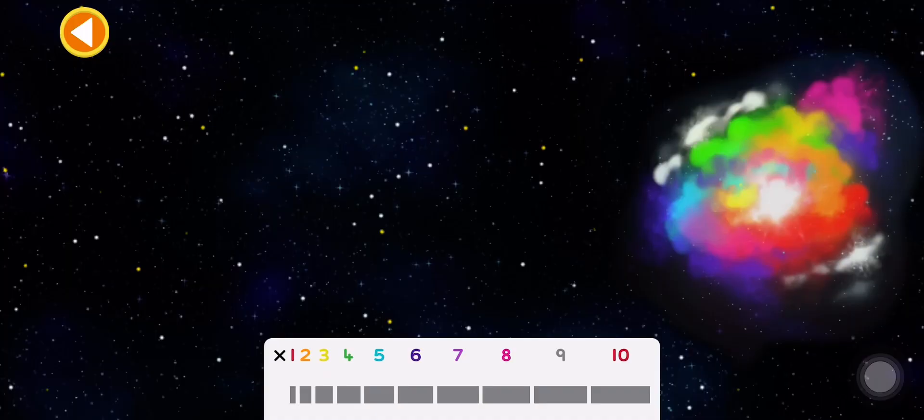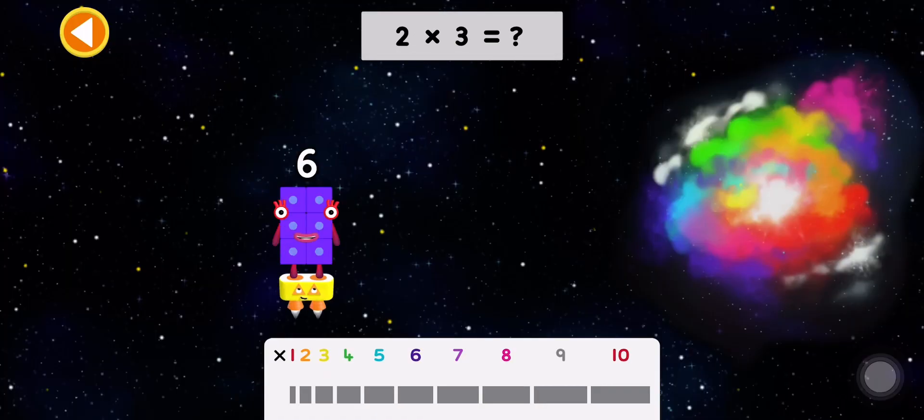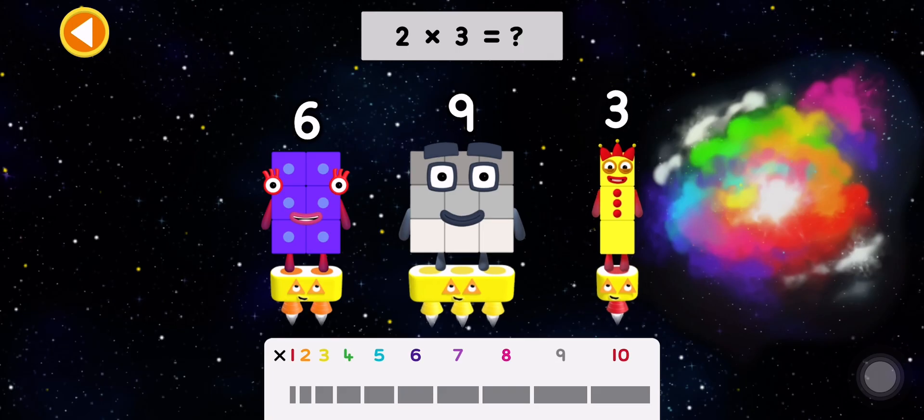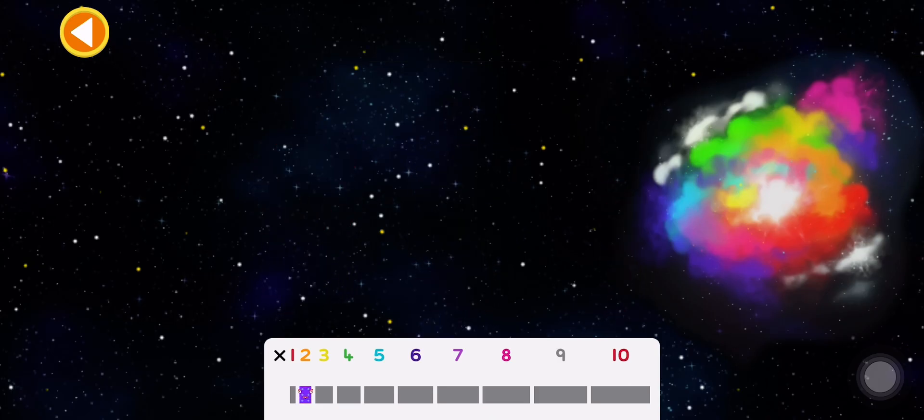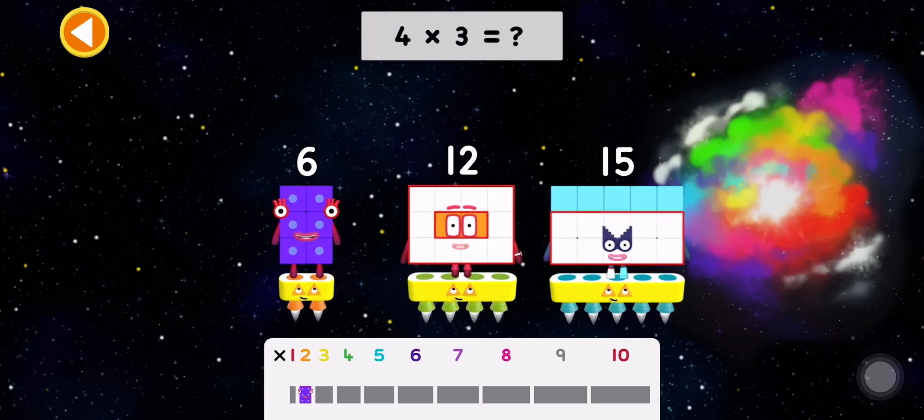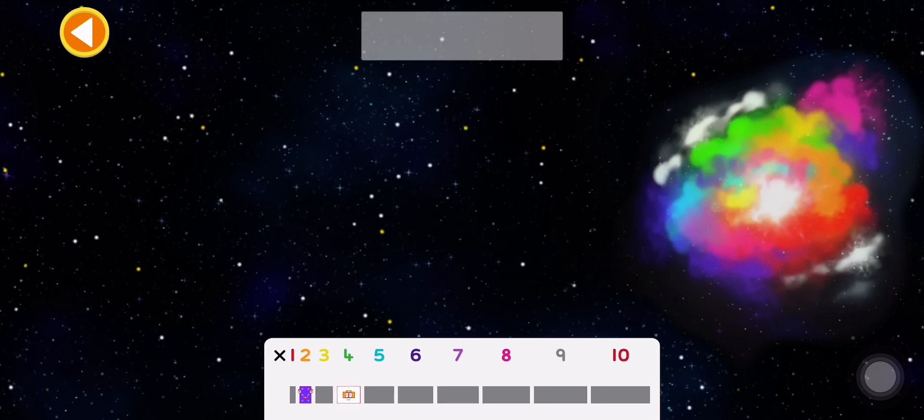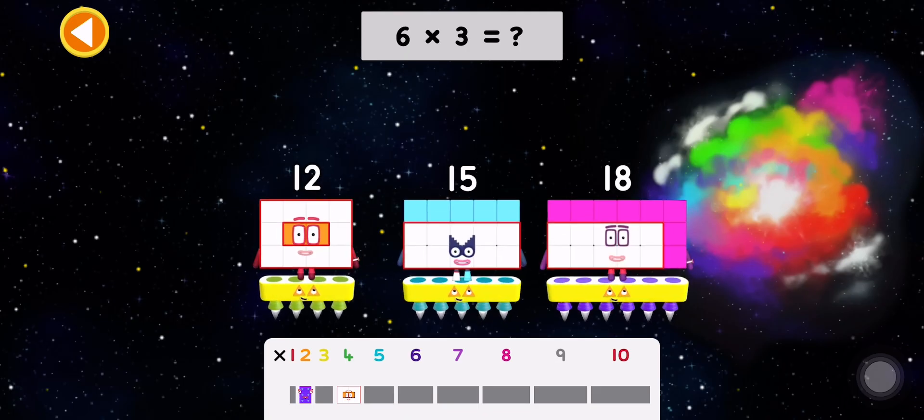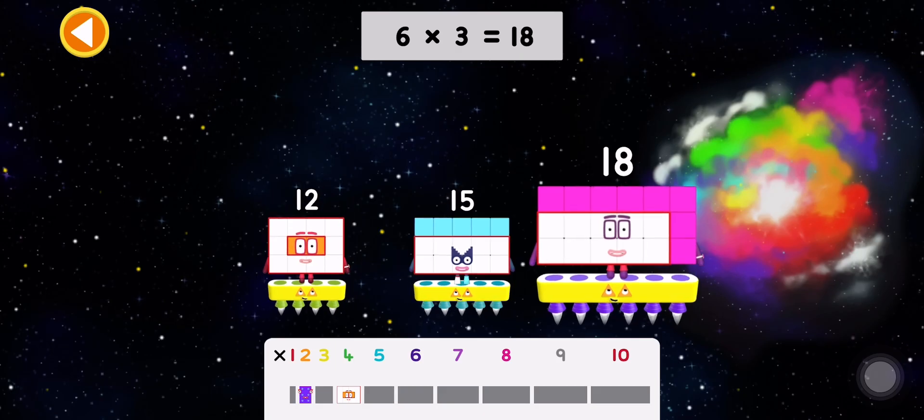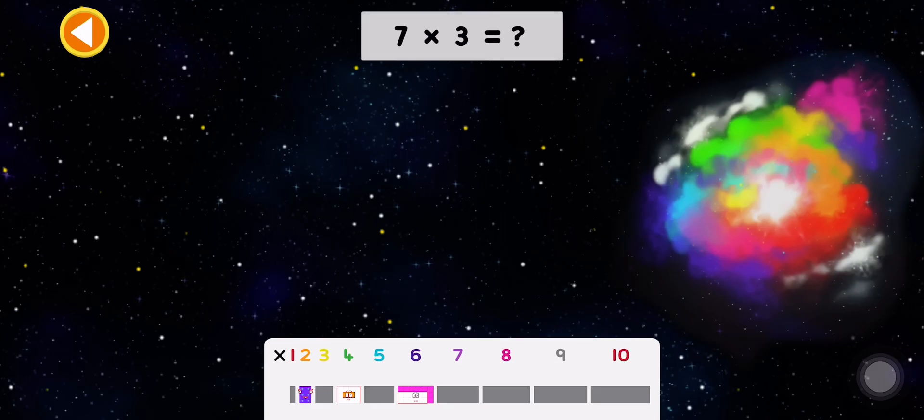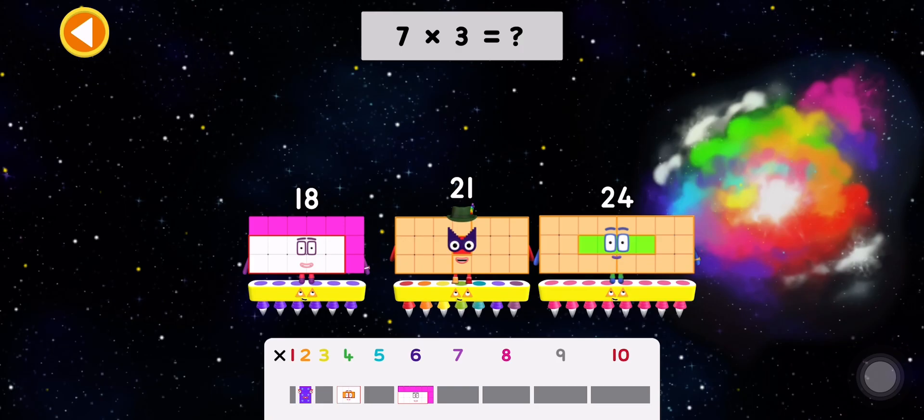Can you complete the three times table? Two times three equals what? Six. Four times three equals what? Twelve. Six times three equals what? Eighteen. Seven times three equals what?